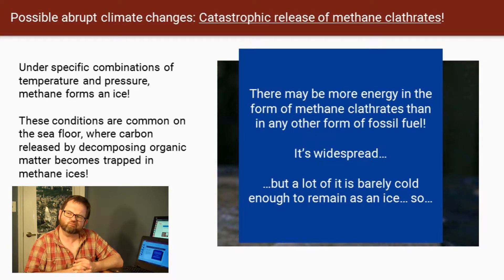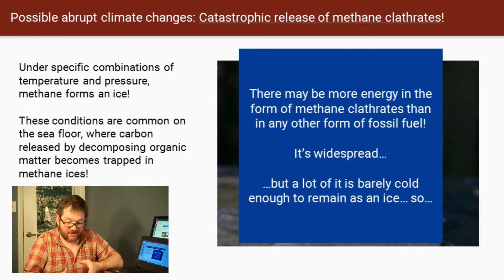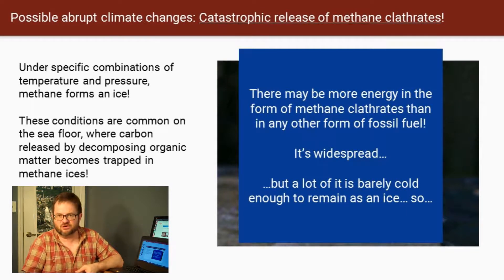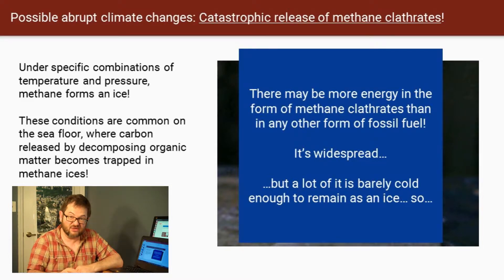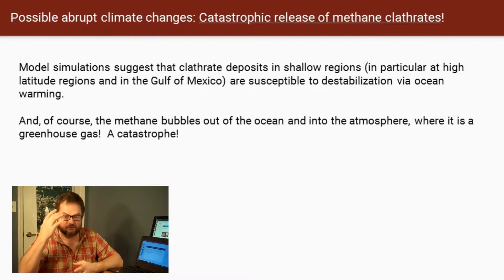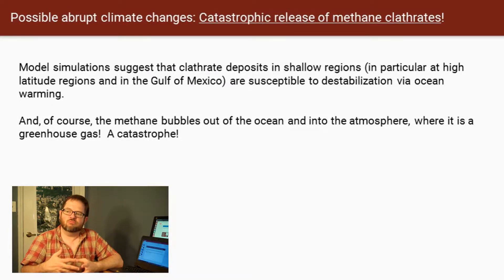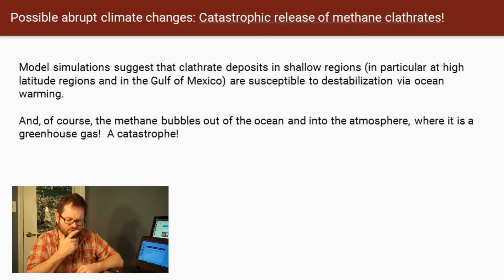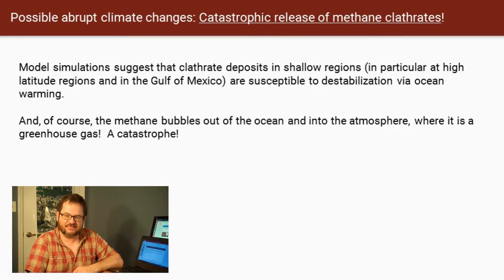There's a problem with these methane clathrates. They exist at a particular range of temperatures and pressures, and a lot of the ocean is just barely cold enough for them to exist. Most of the deep ocean is uniformly around 3 degrees Celsius — that's the temperature at which seawater is most dense. That turns out to be cold enough for methane clathrates to exist, but just barely. We're going to have the planet warming, and even a little warming of the deep ocean could result in a catastrophe — we could start converting methane ices back into gaseous form. They sublimate — going straight from ice to gas at those pressures and temperatures. Methane bubbles out of the ocean just like swamp gas.